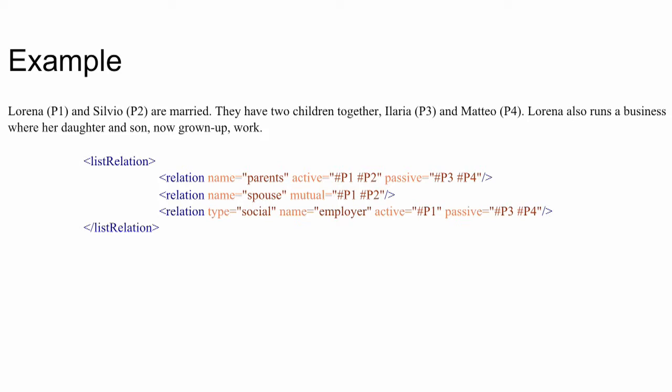Then we have a social type of relationship: Lorena employing her two children. This is the employer type of relationship, where in the active role we have P1 (Lorena), and in the passive role of employees we have the children, P3 and P4 — Hilaria and Mateo. With this ends our description of the encoding of names, references to names, and lists of names. Thank you for your attention.